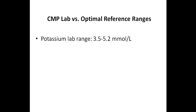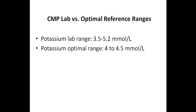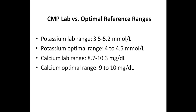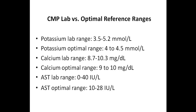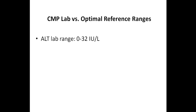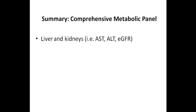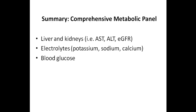An average potassium lab reference range would be 3.5 to 5.2, and an optimal range would be 4 to 4.5. For calcium, an average lab range would be 8.7 to 10.3, whereas an optimal range for calcium would be 9 to 10. For AST, which is a liver marker, an average lab range would be 0 to 40, whereas an optimal range of AST would be 10 to 28. ALT is another liver enzyme, and the lab range would be 0 to 32, whereas the optimal range would be 10 to 28. This panel can help to evaluate the health of your liver and kidneys. It looks at the electrolytes, along with the blood glucose and the blood proteins.